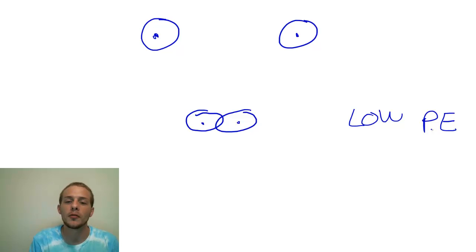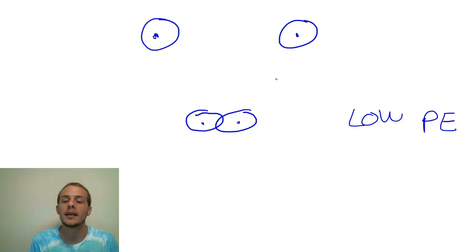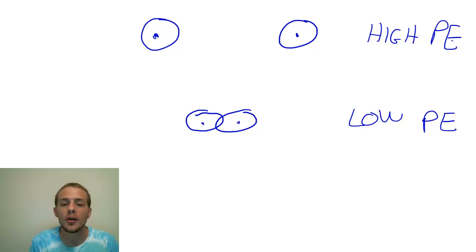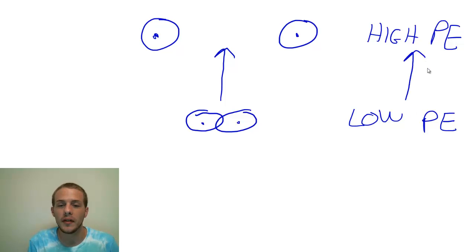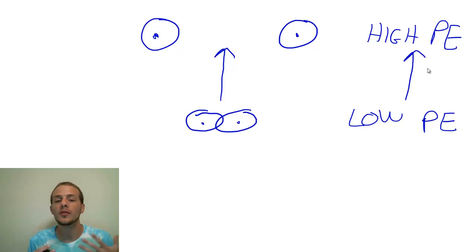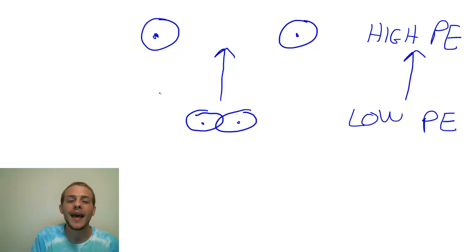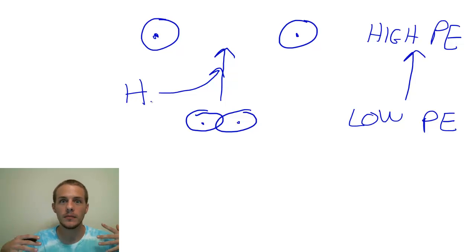Conversely, when atoms are far apart from one another they don't enjoy that stabilization effect, so they have a much higher potential energy. If we break a bond, we go from a state of low potential energy to a state of high potential energy. In order to make any system go from low to high potential energy, we have to add energy to that system in the form of thermal energy — heat or enthalpy.